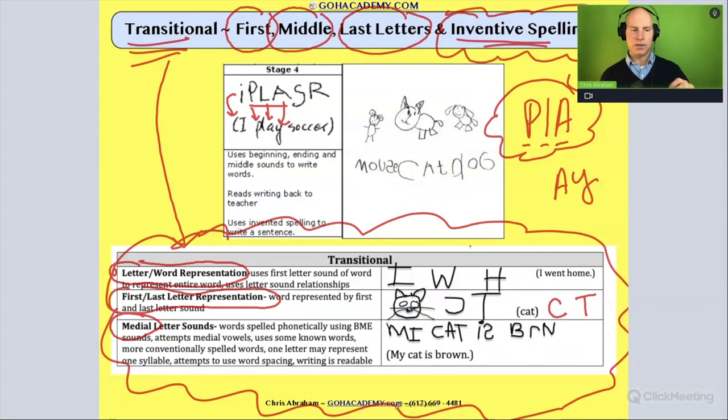Now here they start to work on that medial or middle vowel sound. And this is where, as that child progresses in phonics, clarifying those middle vowel sounds. Is it a vowel team or a diphthong? What's going on with that vowel sound? Is it a controlled R, is it magic E?